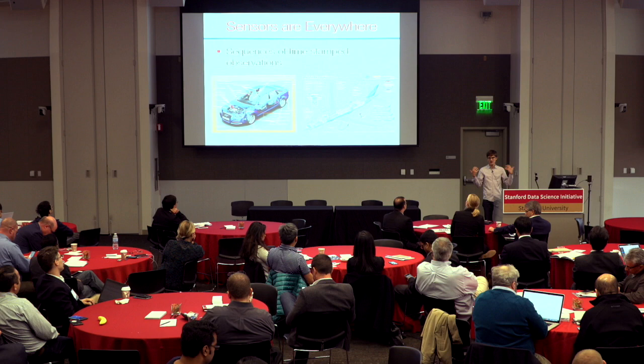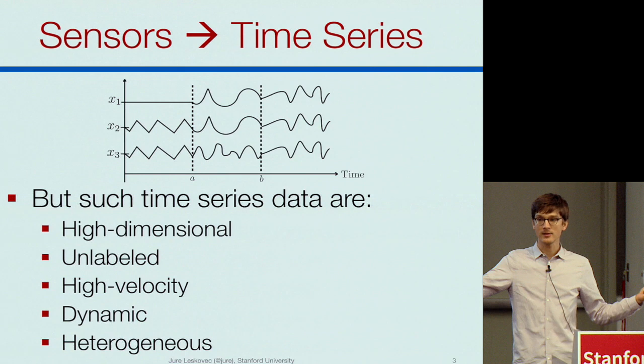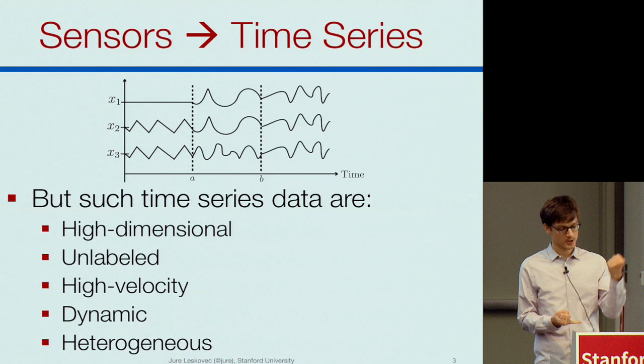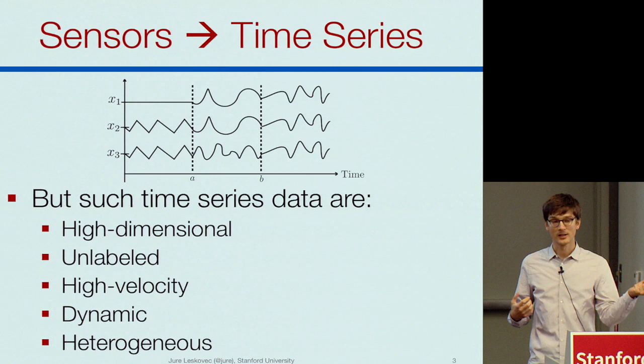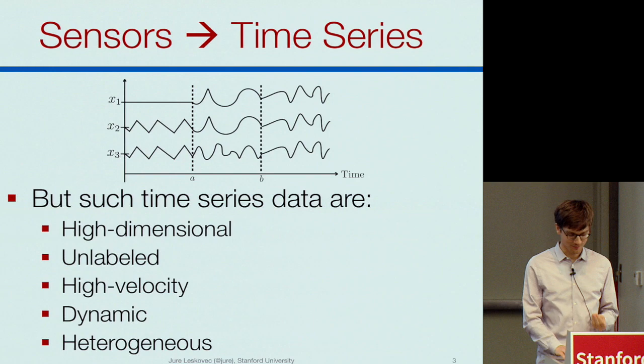We think of this as massive streams of data coming at high velocity. If I get a 20,000-dimensional vector 10 to 60 times a second, what can I do with it? This data is very challenging: it's unstructured, super high-dimensional, unlabeled, extremely high velocity, very heterogeneous — some sensors read constantly, others not at all — and sensors might fail, with environmental conditions adding further complications.